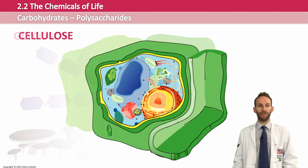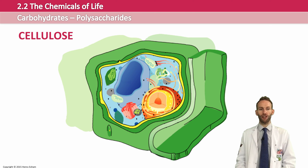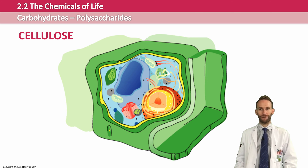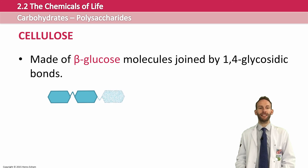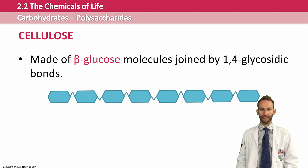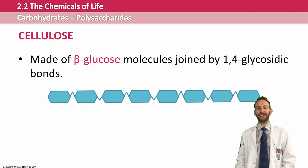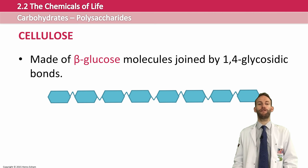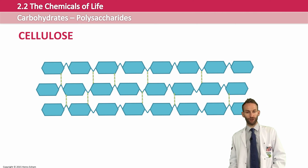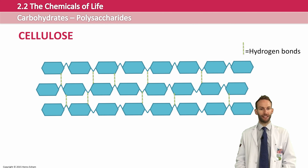Cellulose is a very strong substance used for making cell walls in plants. It is made of beta glucose molecules joined by 1,4 glycosidic bonds. Alternate molecules are actually inverted so that the bonding can take place. Because of this alternate orientation, some bonds point up and some point down, giving it a straight, fibrous structure. This also means that crosslinks can form — via hydrogen bonds between different cellulose molecules — allowing cellulose fibres to be made, which are extremely strong.